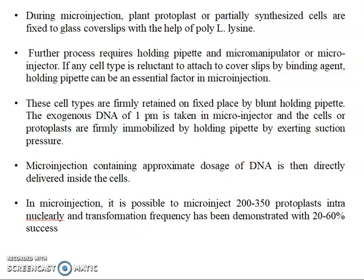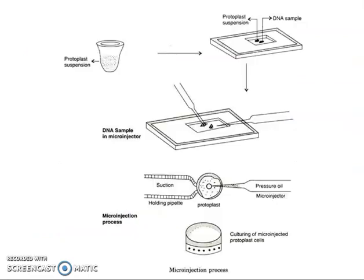The appropriate dosage of DNA — mentioned here as 1 picometer — is directly delivered into the cell. In micro injection, it is possible to micro inject 200 to 350 protoplasts intranuclearly, and the transformation frequency demonstrated is 20 to 60 percent success rate.